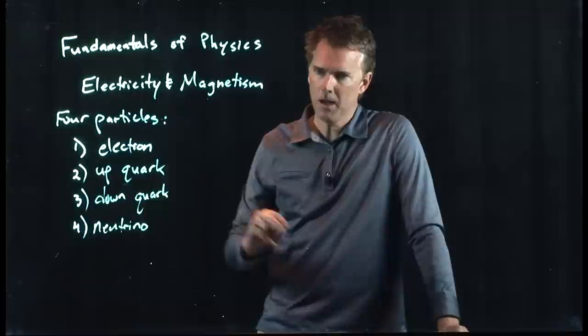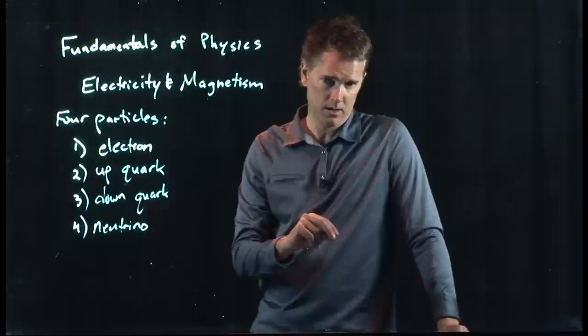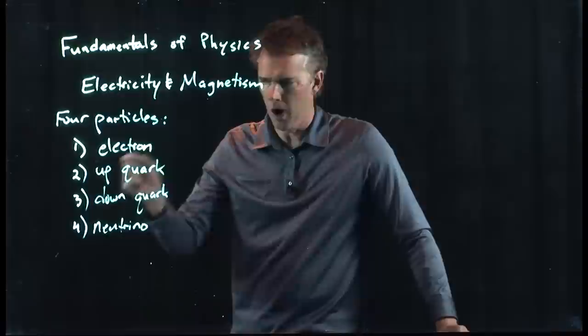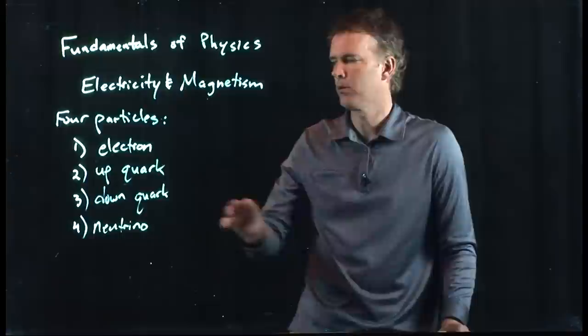Electrons you're familiar with — everybody's heard of electrons. The rest, maybe you're not so familiar with. But you kind of are, because the up quark and the down quark go into the proton and also into the neutron. A proton is two up quarks and one down quark. A neutron is two down quarks and one up quark. Protons and neutrons are, in fact, made up of quarks.